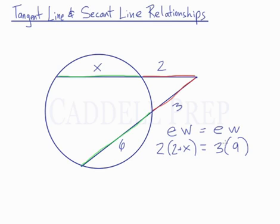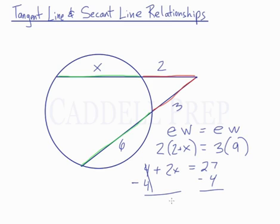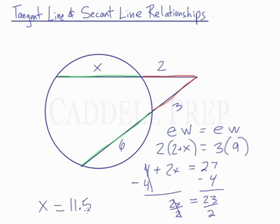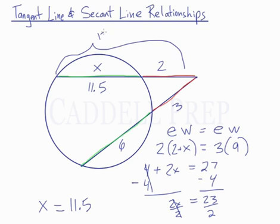Let's solve. Distributing on the left: 2 times 2 is 4, and 2 times X is 2X. So 4 plus 2X equals 3 times 9, which is 27. Subtracting 4 from both sides gives 2X equals 23. Dividing both sides by 2, we get X equals 23 divided by 2, which is 11.5. So this measurement is 11.5, and the whole length of that secant would be 13.5.